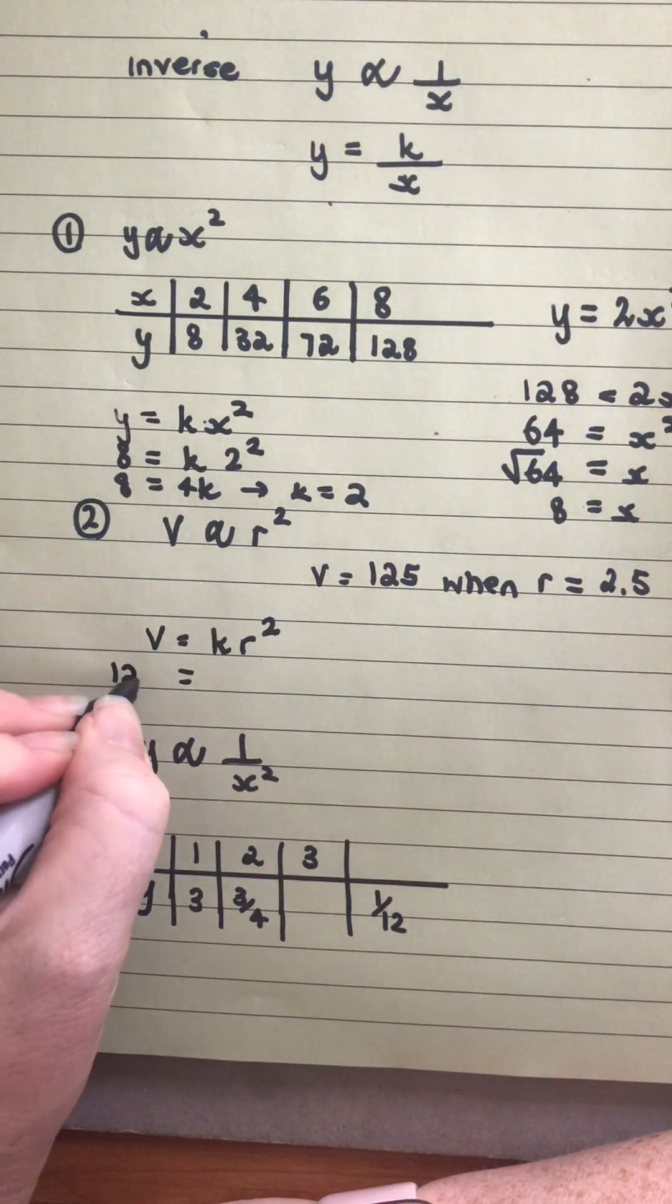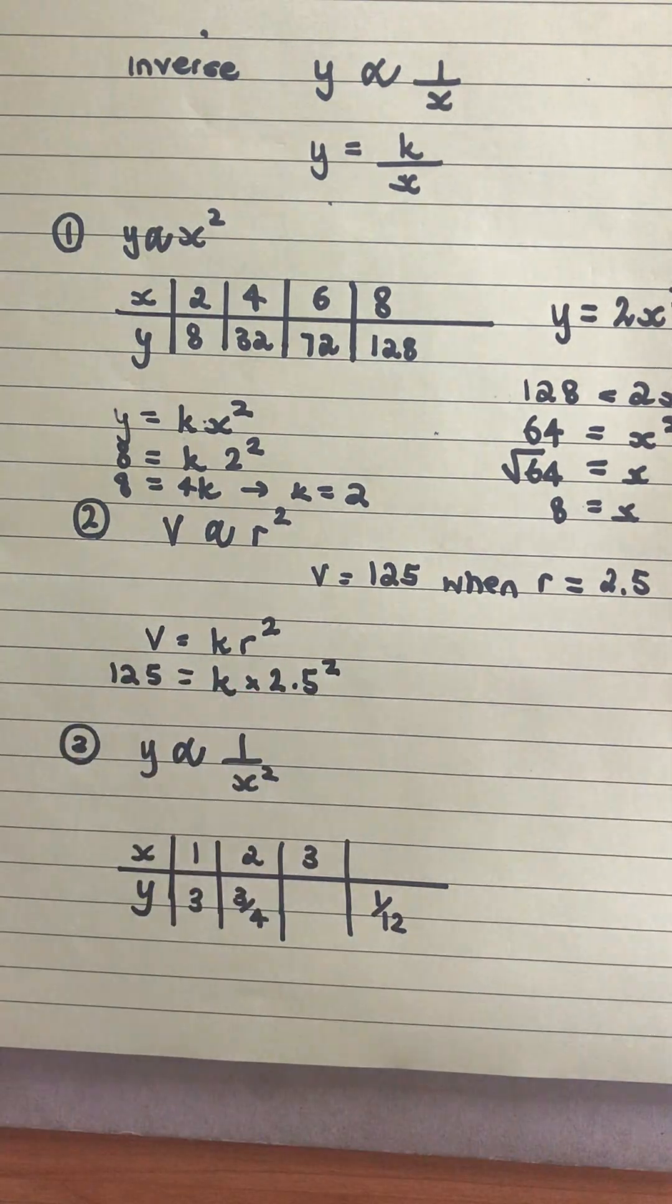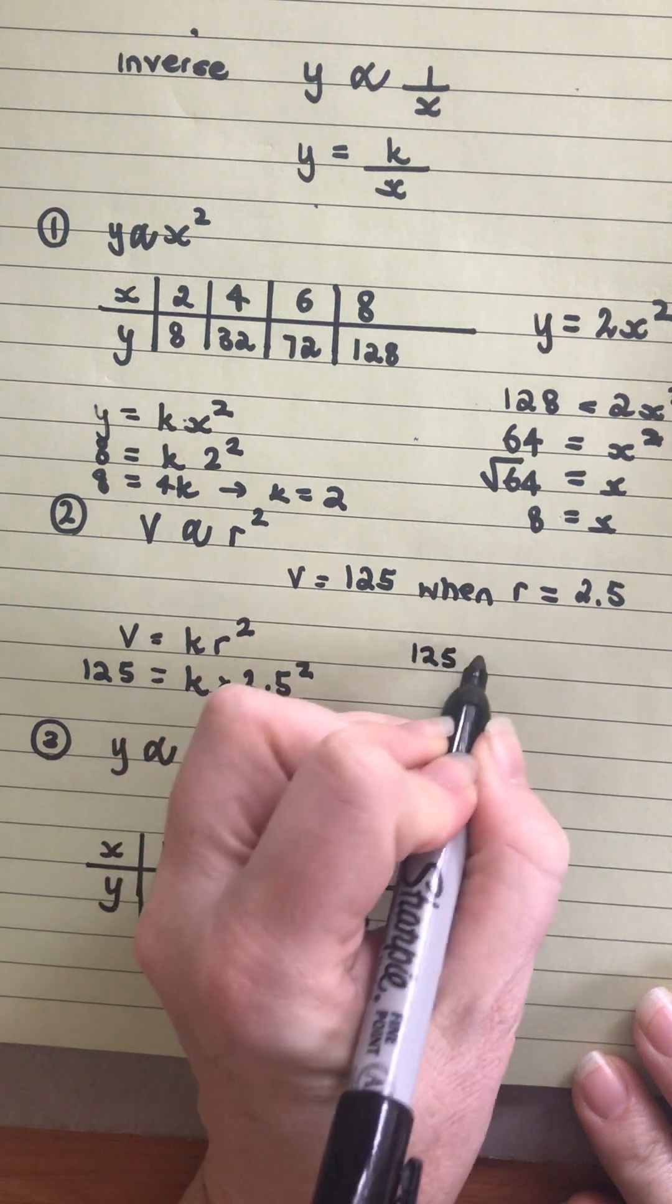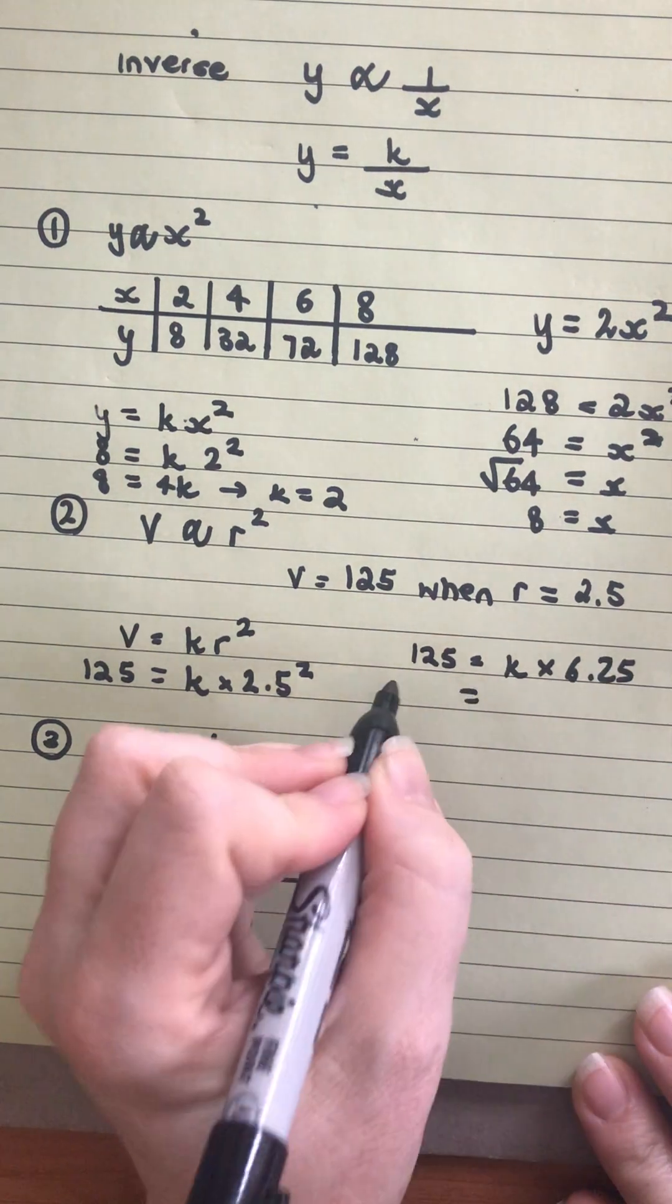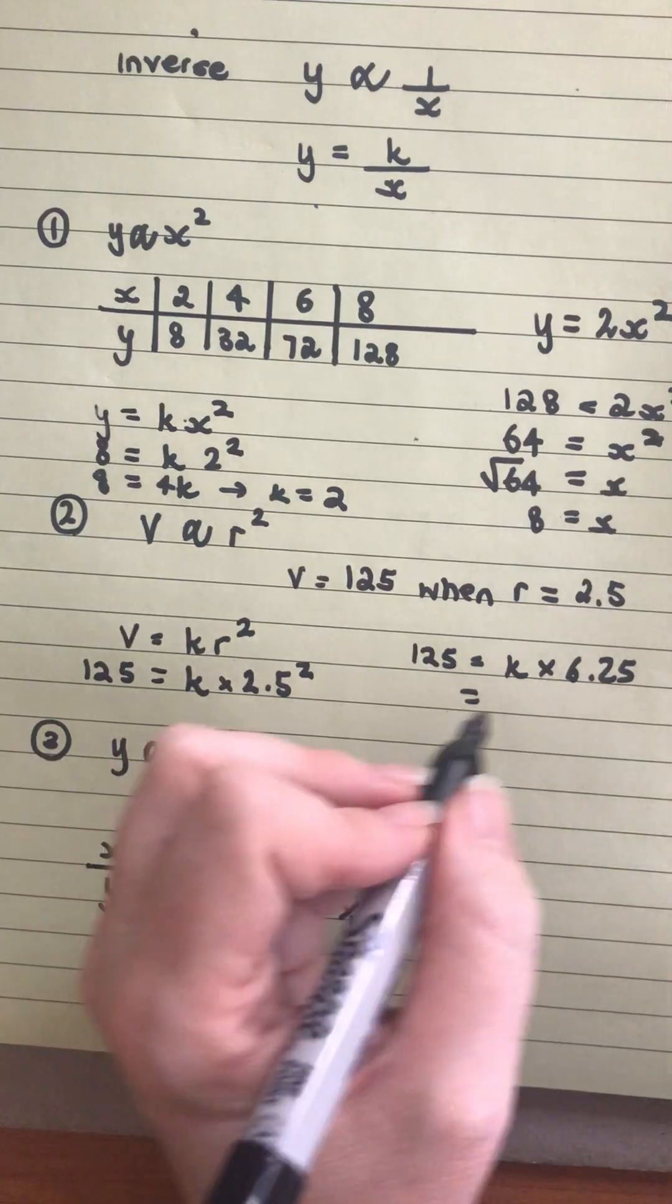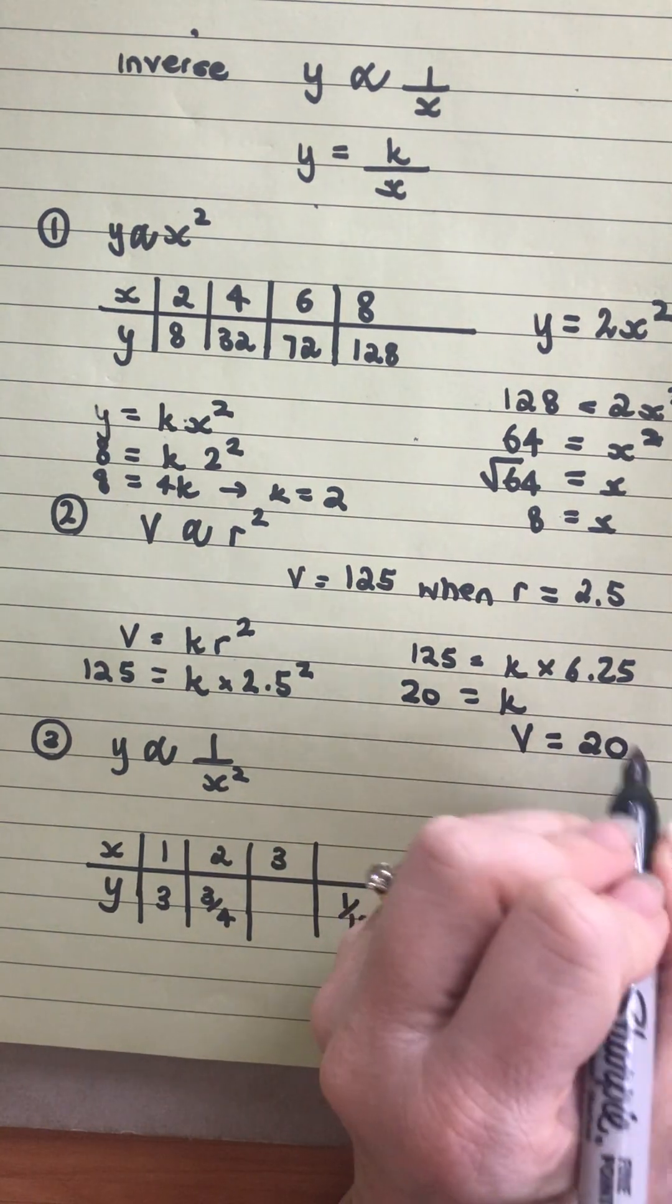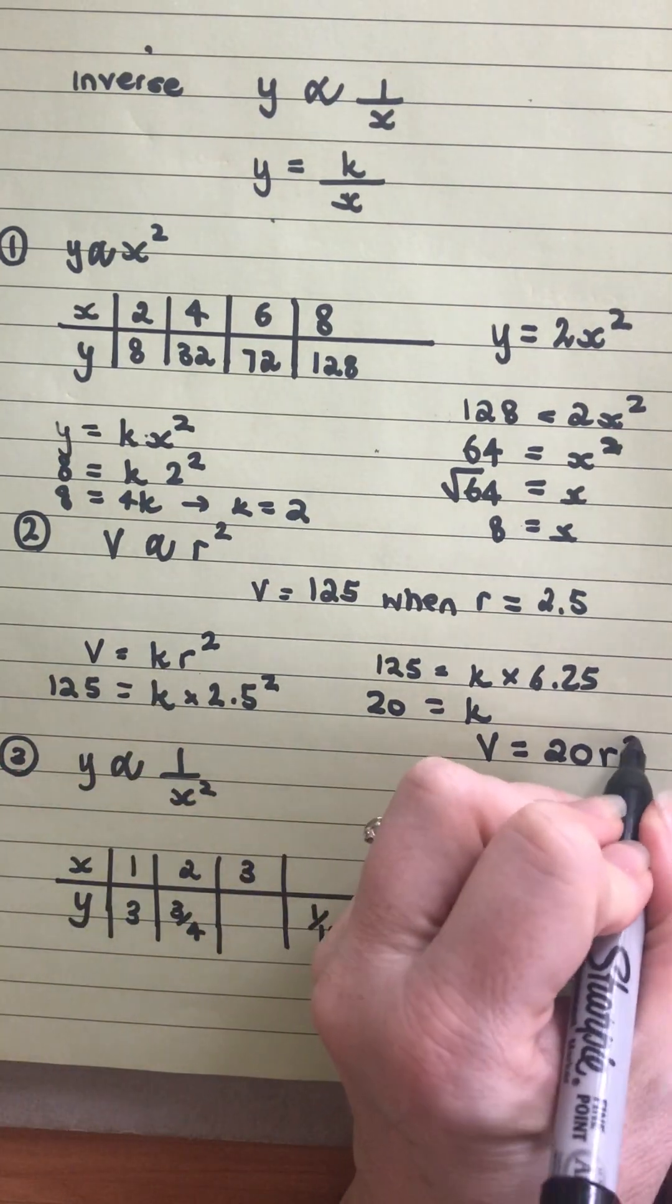We've got 125 is equal to k times 2.5 squared. When I do 2.5 squared, I get 6.25. So I've got that 125 is equal to k times 6.25. To get what my k is, I'm going to divide both sides by 6.25. And I'll get k is equal to 20. In this case, all I was doing was finding out that k value and putting it back in to my equation. I wasn't solving anything with it. So I can just write 20r squared.